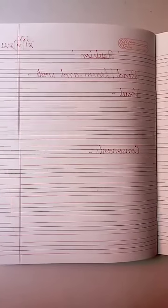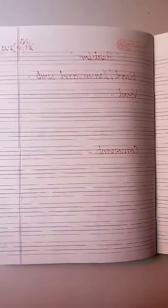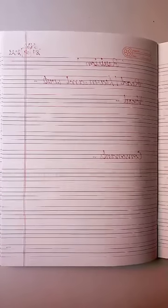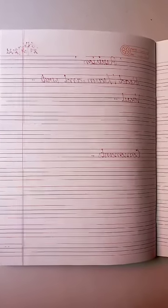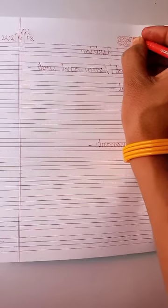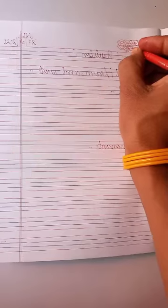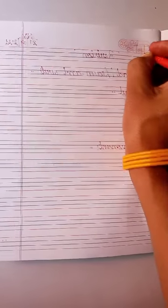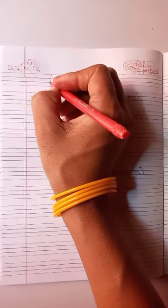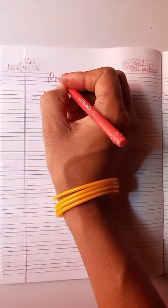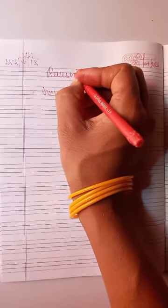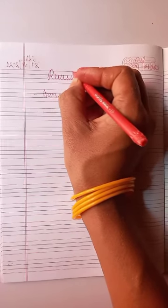Children, this is your English page. Firstly, we write CW and date. Write here: CW and date — 29, month 4, year 2021. Next, write the heading: Revision. R-E-V-I-S-I-O-N. Revision.